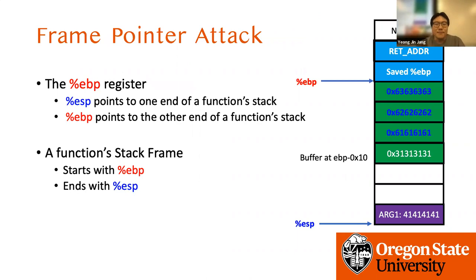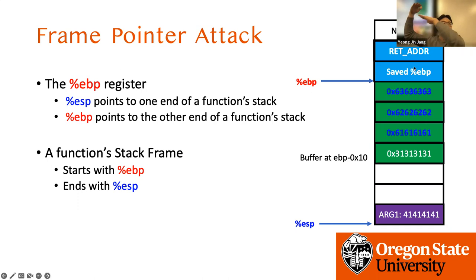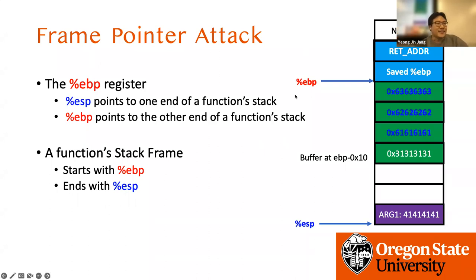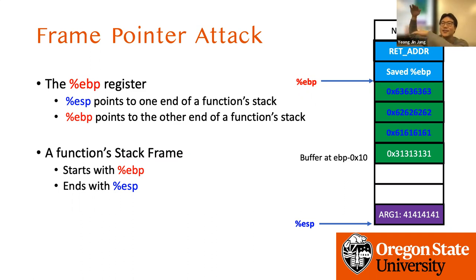Today we will learn about the frame pointer attack. Instead of focusing on overriding the return address, we will focus on overriding the saved EBP. Not just the return address — the saved EBP also affects how we use the stack. The main goal of today's lecture is to understand what happens if a hacker can manipulate the EBP value arbitrarily. ESP always points to the end of the current program stack, and EBP points to the start of the current stack frame.